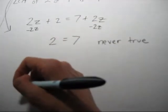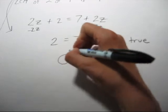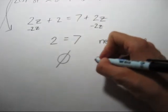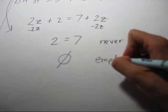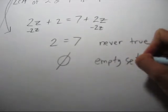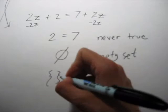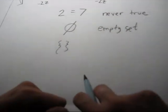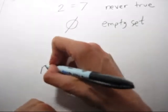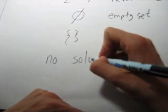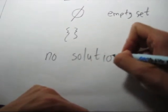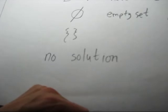You can write this. This is empty set. Another way to write that is you write the brackets with nothing in them, or you can write out the words, no solution. Okay, let's scroll up. Thank you.